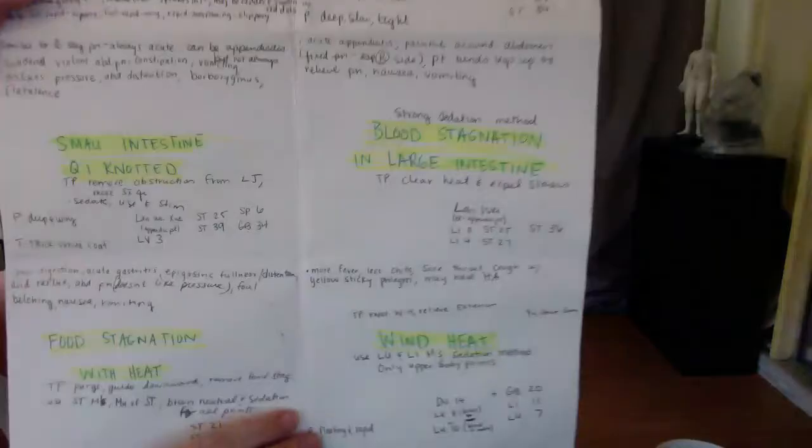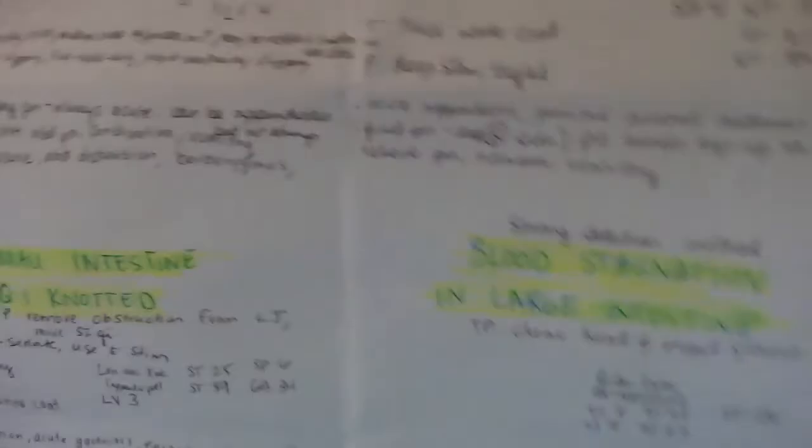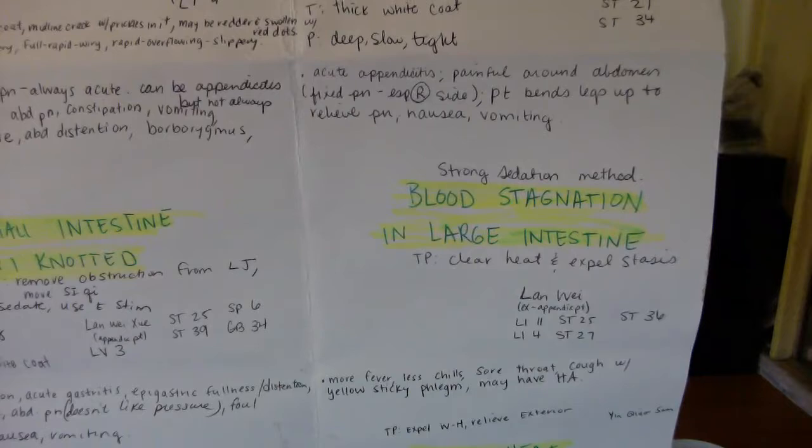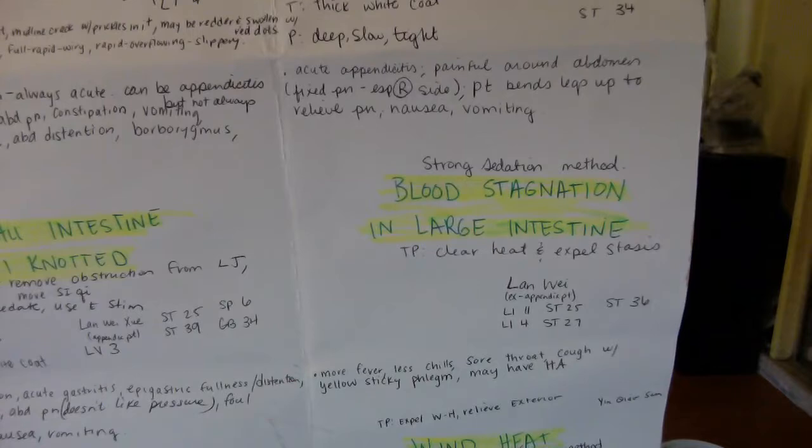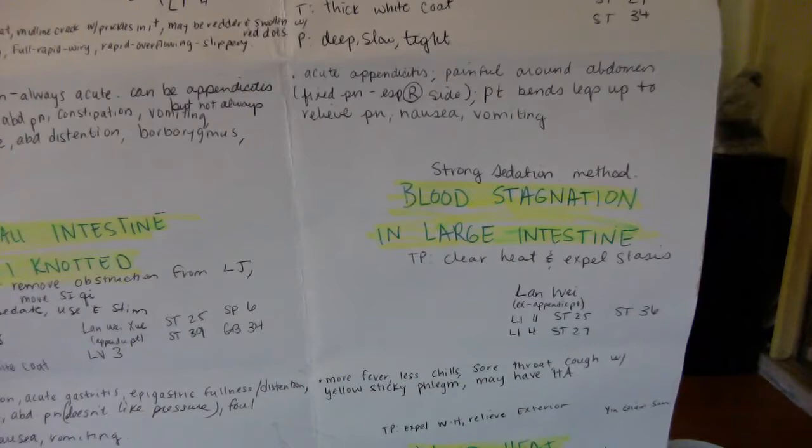Blood stagnation in the large intestine is similar to acute appendicitis. It's painful around the abdomen, fixed pain especially on the right side. Patient bends legs up to relieve pain, nausea and vomiting.